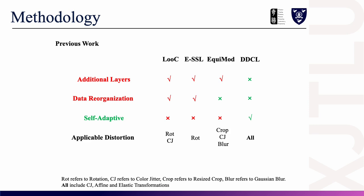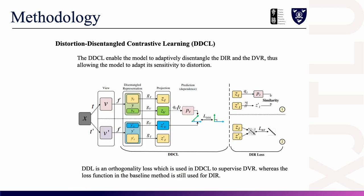I will now introduce our proposed DDCL. DDCL disentangles the output of the backbone network into DIR and DVR and feeds them into their respective mapping layers. The DVR is supervised using our proposed distortion-disentangle loss, DDL for short, and the DIR part retains the baseline design. DDL is a loss function of orthogonality that achieves DVR extraction by forcing partial feature orthogonality of positive sample pairs. DDL can be applied to both symmetric and asymmetric architectures.